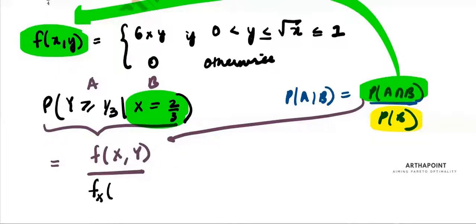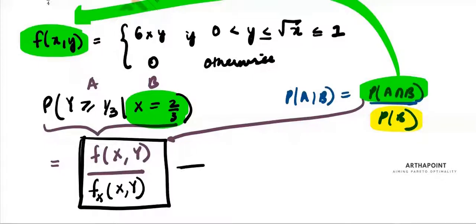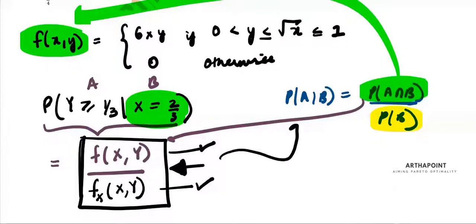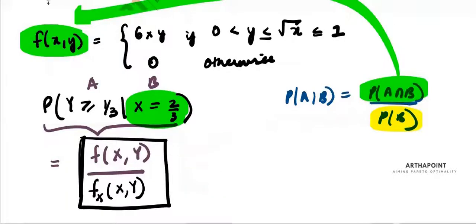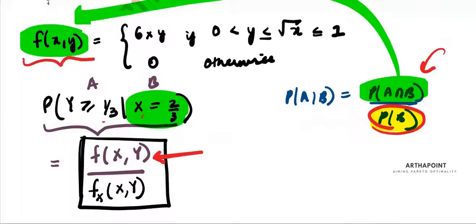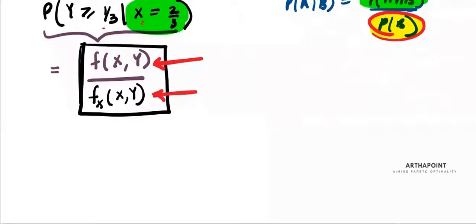So I can say this is divided by the marginal probability density function of X. This is something we have done in class when studying joint probability density functions, marginal functions, and conditional probability functions. The intersection is given by the joint function, and to find the probability of any one variable from the joint, you find the marginal function. Let's first find the marginal function.